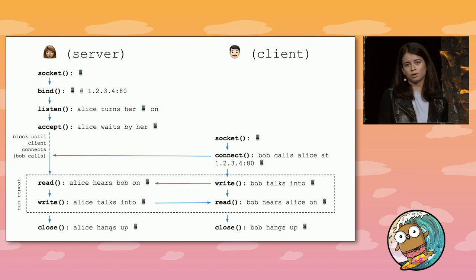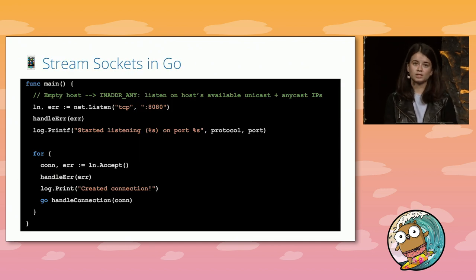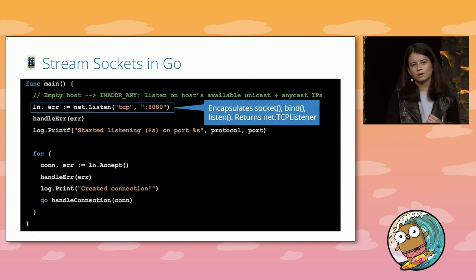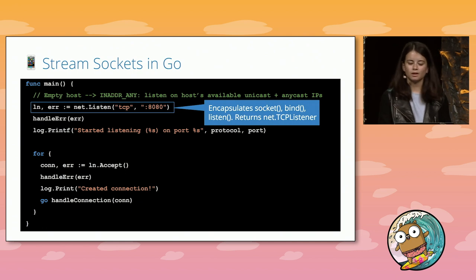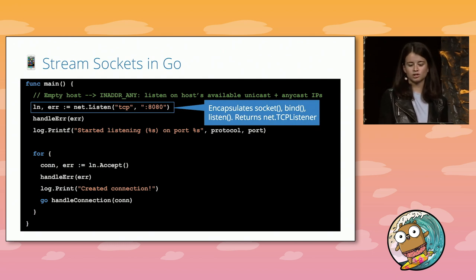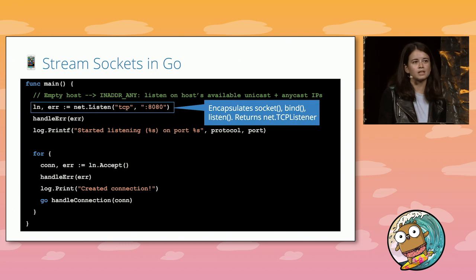Go distills all of these actions into a smaller set of calls. Here I've started some code for a simple TCP echo server. The first thing I do is call net.Listen. The net.Listen function creates a socket, binds it to my given address, and listens for inbound TCP connection requests. It returns a net.TCPListener struct which we use for managing server connections. For my address, I choose port 8080 and don't specify a host, defaulting to internet address any, which binds to all available IP addresses on that machine — a common way to expose a service.